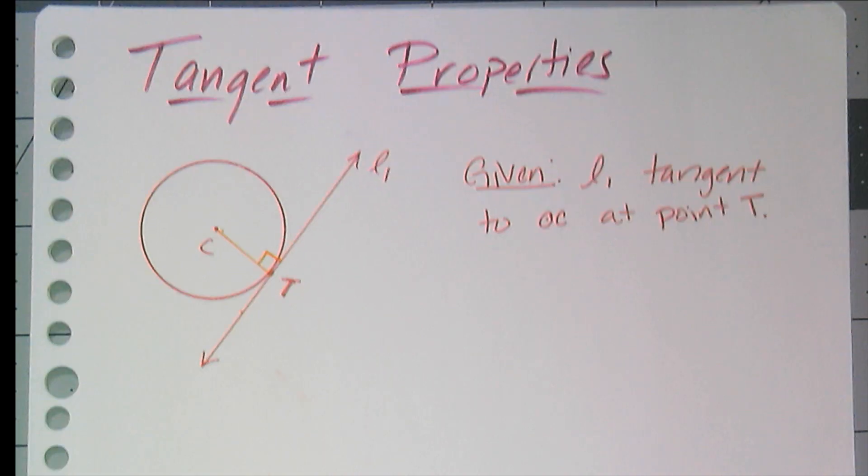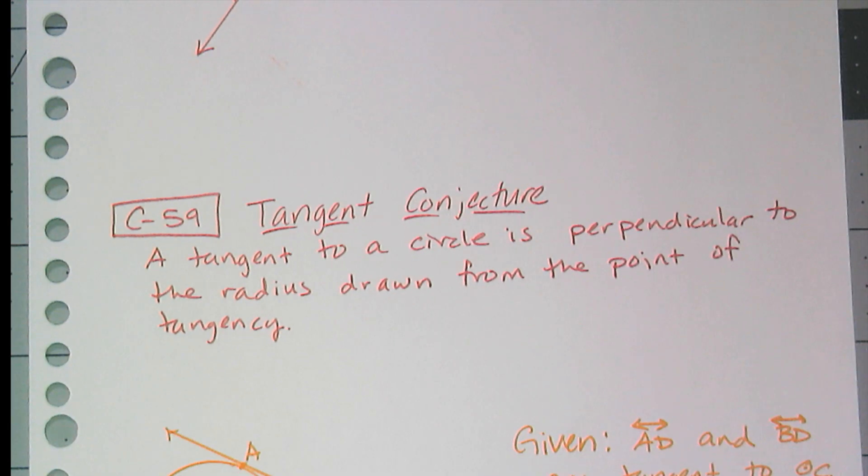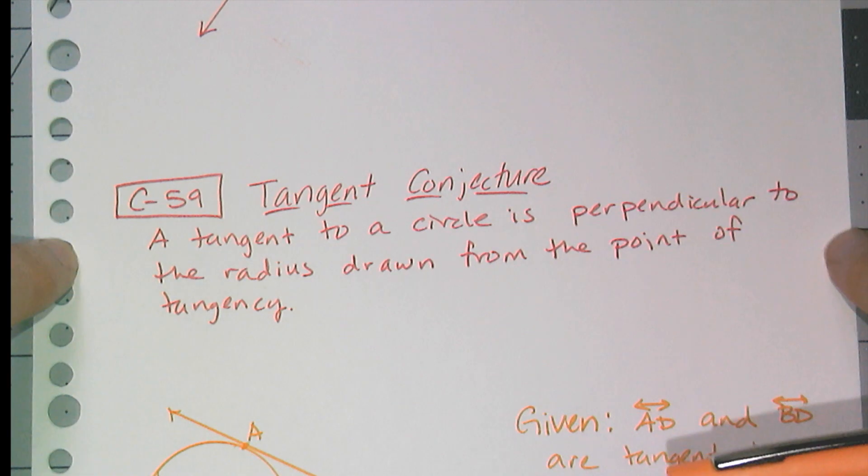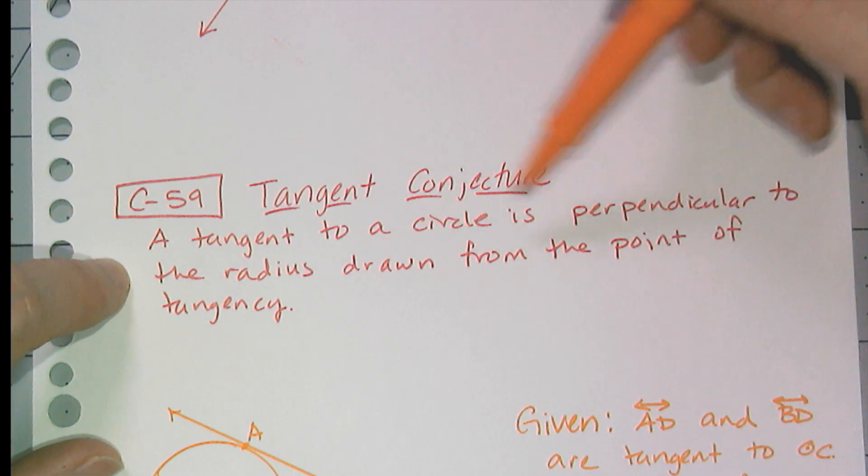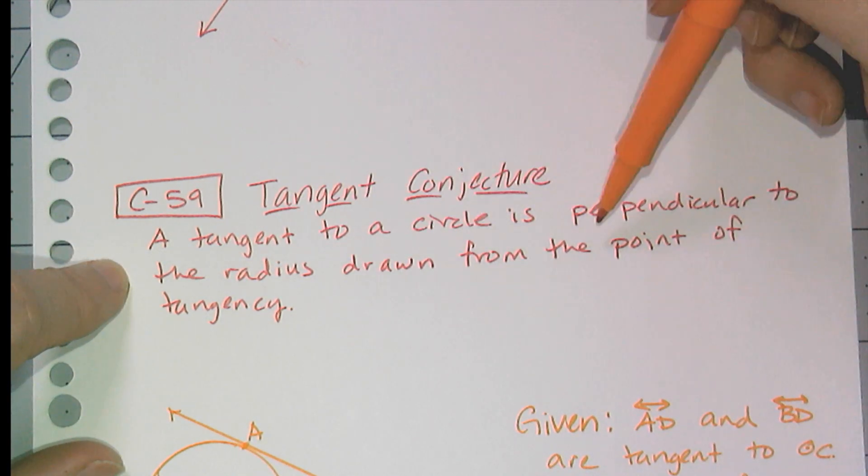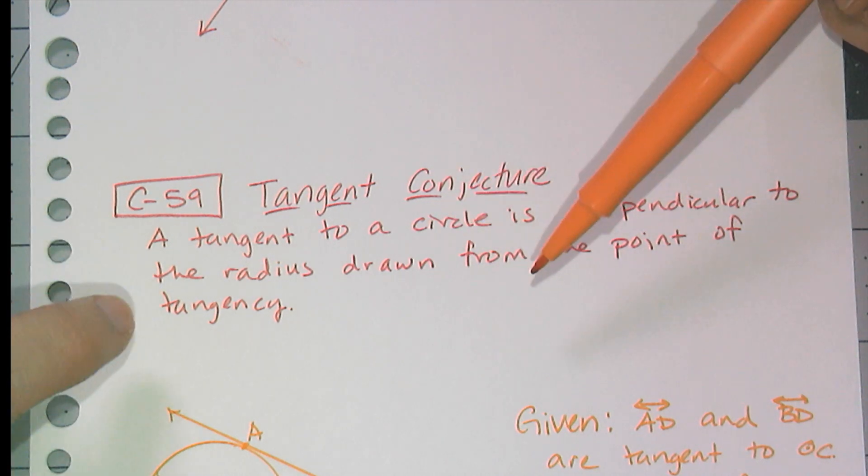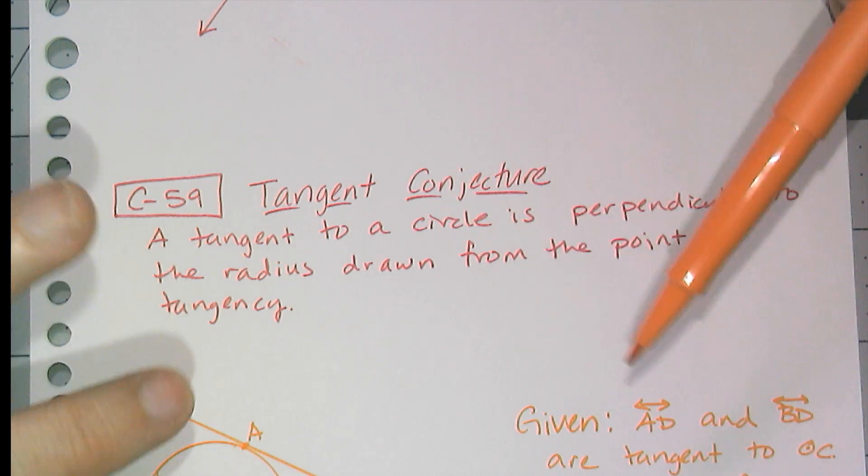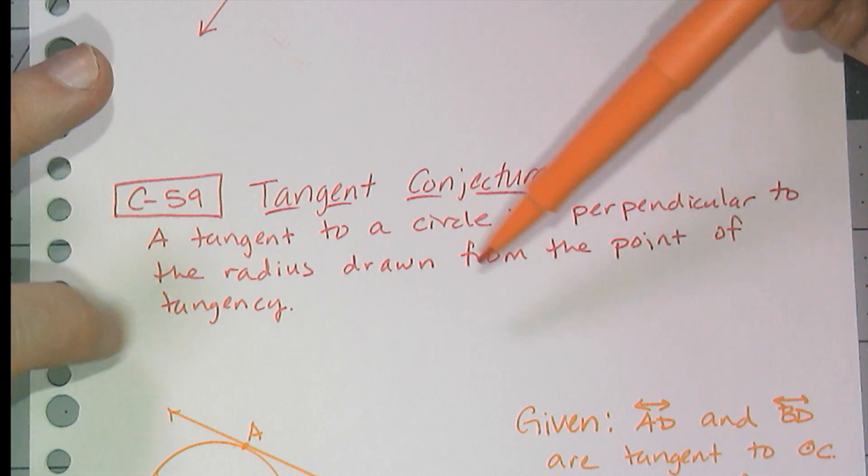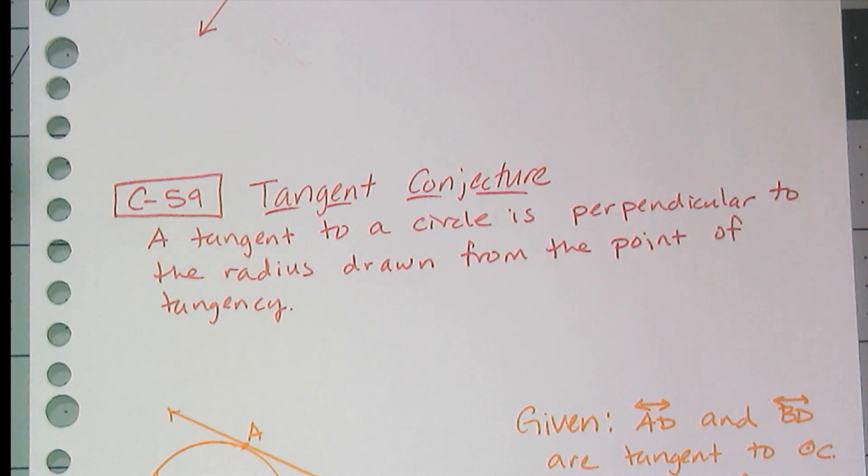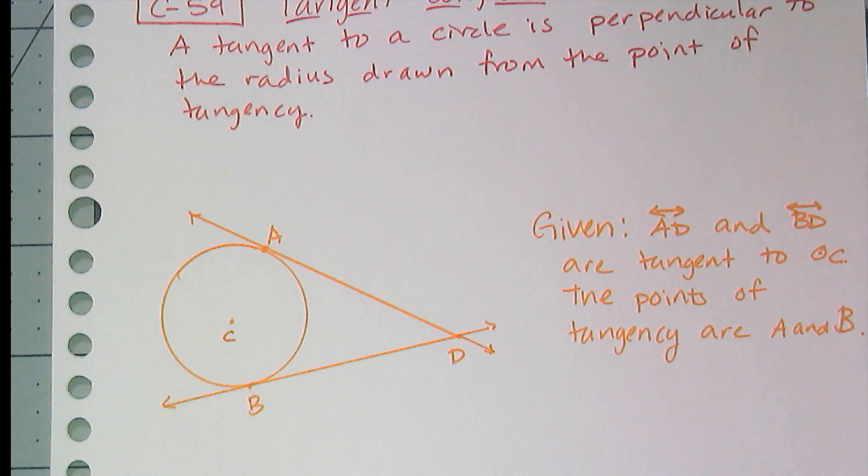This gives us conjecture 59. It's called the tangent conjecture. Super important. You must know this. A tangent to a circle is perpendicular to the radius drawn from the point of tangency. Now this is one of those conjectures that oftentimes in drawings, we don't add it onto the drawing. We just tell you it's tangent. And oftentimes you have to add the radius in to solve whatever problem you're working with.